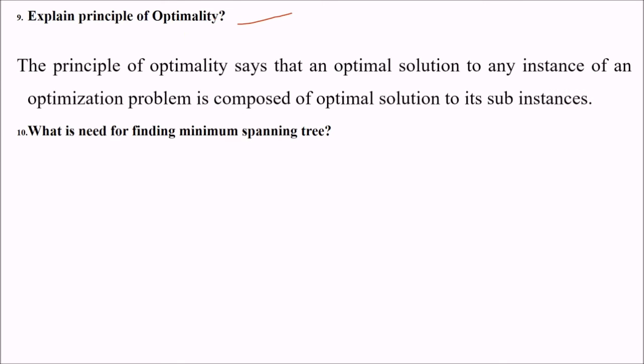Explain principle of optimality. When will you say that this is an optimal solution? The principle of optimality says that an optimal solution to any instance of an optimization problem is composed of optimal solution to its subinstances. This is the principle of optimality.